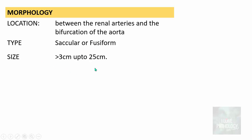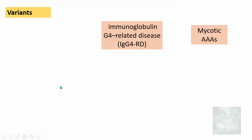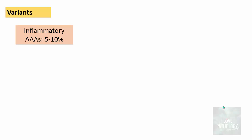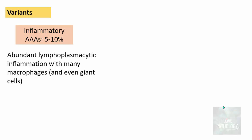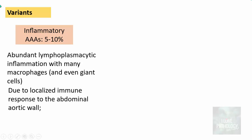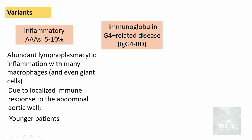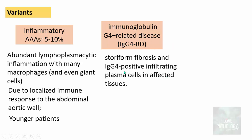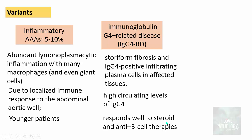These aneurysms are usually more than 3 cm and can be up to 25 cm in diameter. Variants include: first, inflammatory abdominal aortic aneurysms, accounting for around 5 to 10% of cases, showing abundant lymphoplasmacytic inflammation with macrophages and giant cells due to a localized immune response, usually seen in younger patients. Second, IgG4-related disease, showing storiform fibrosis and IgG4-positive infiltrating plasma cells, very high circulating IgG4 levels, and responding well to steroid and anti-B cell therapies.